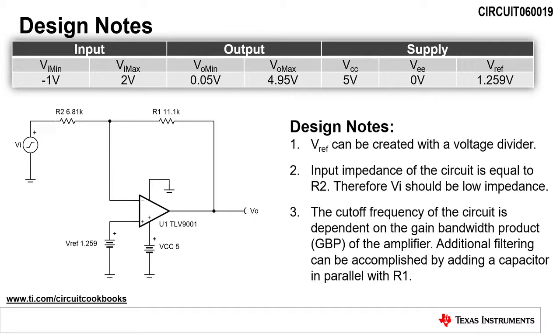Next, the input impedance of the circuit is equal to R2. This is important because the input signal needs to come from a low impedance source.